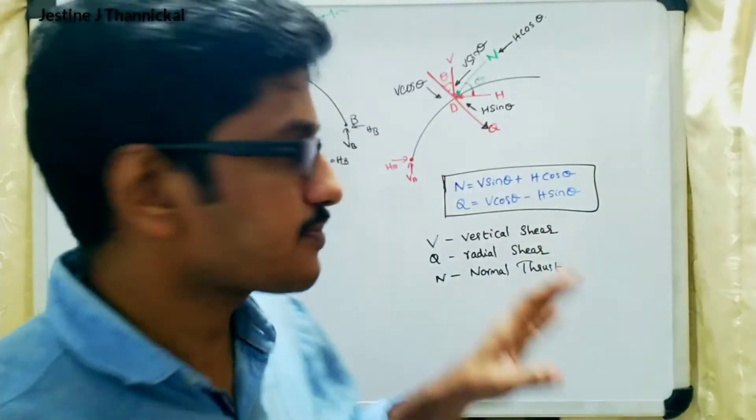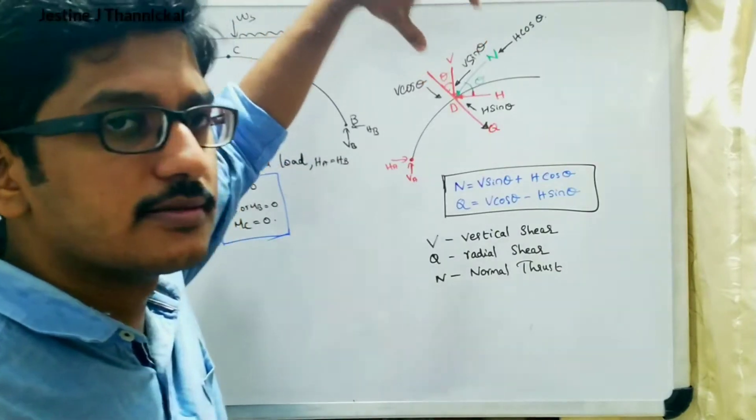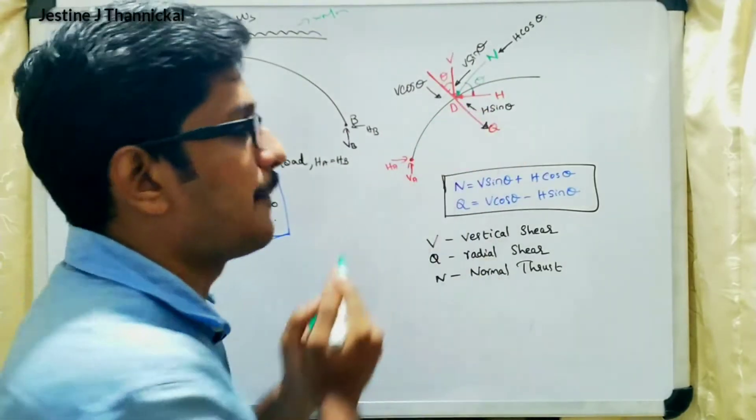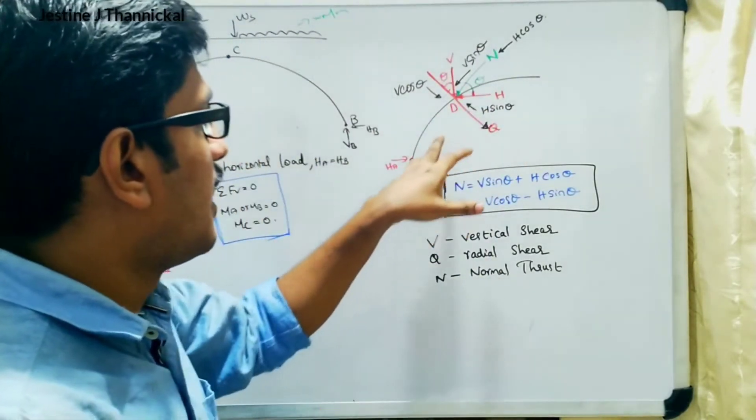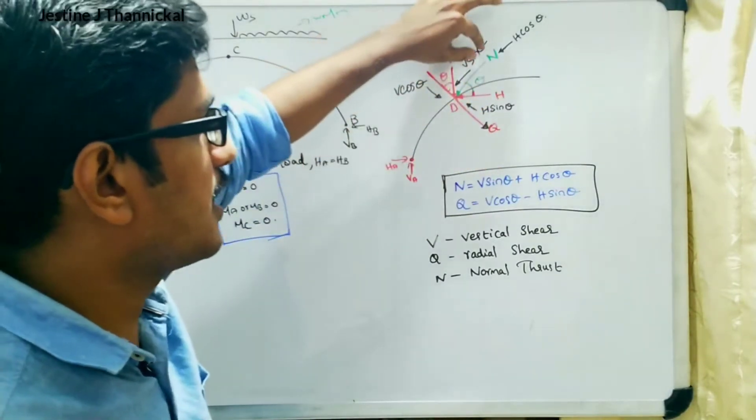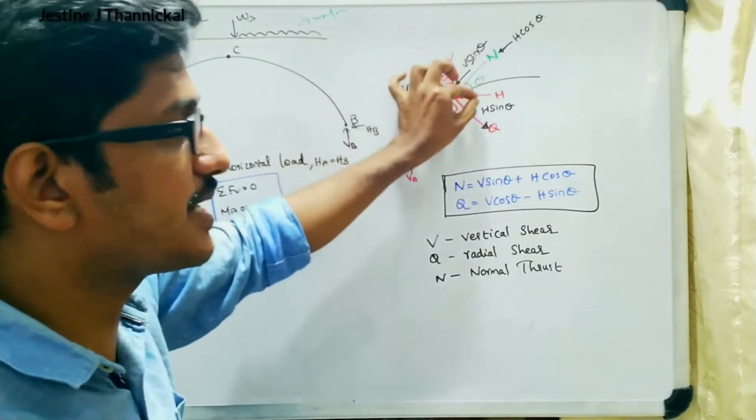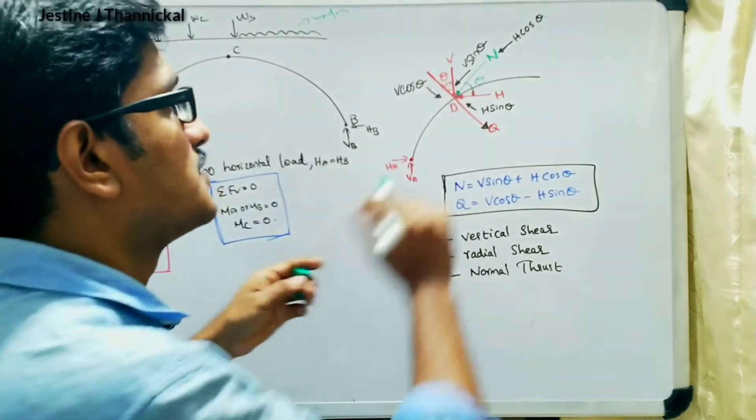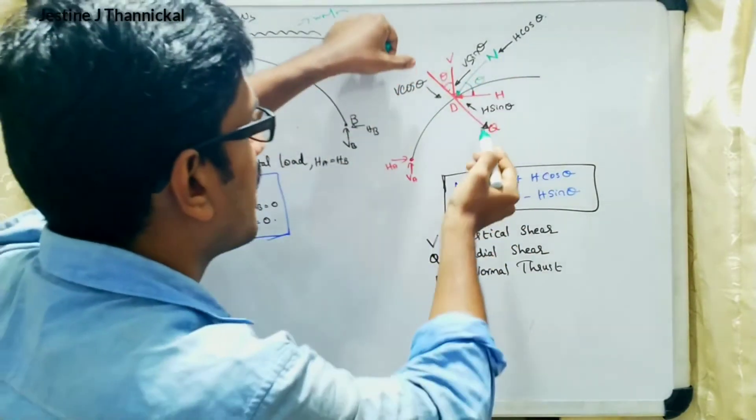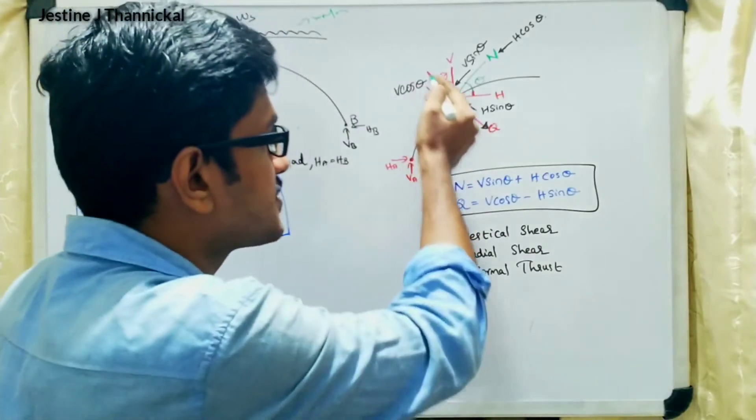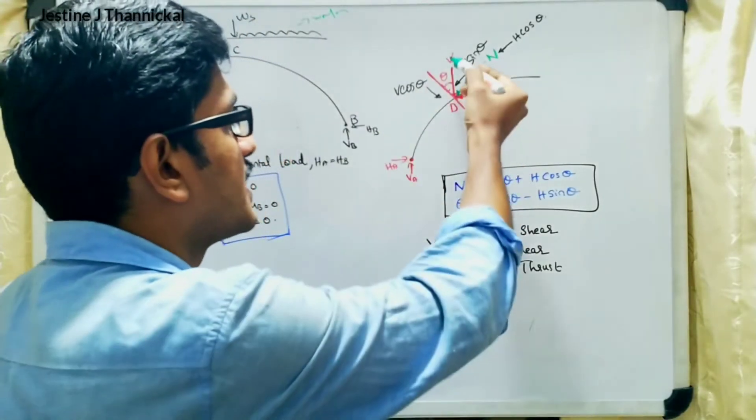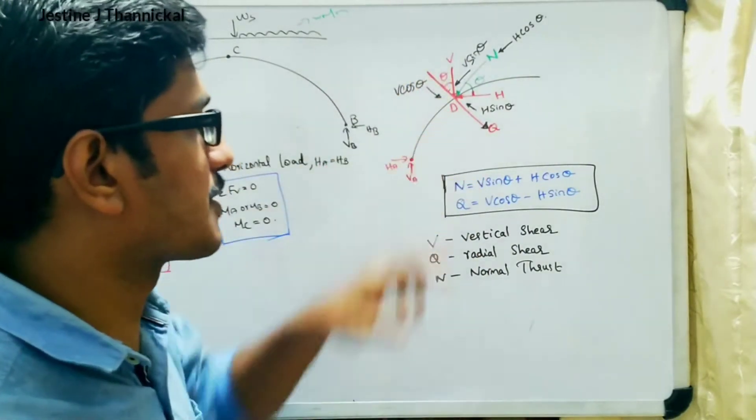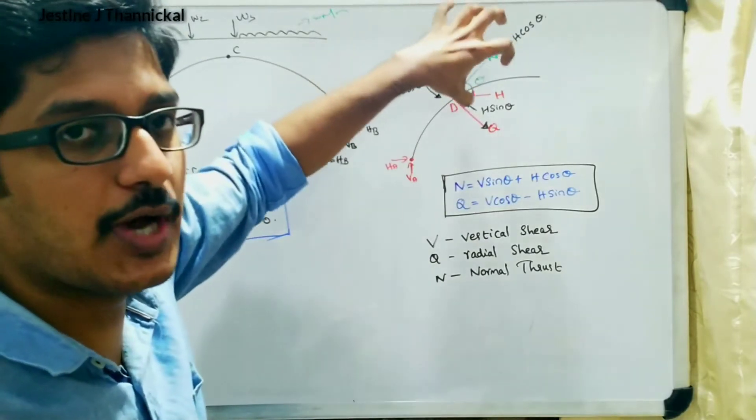Then coming to one of the important equations which is going to be applied in different problems. Here let us take a point capital D over this arc. And here we can see that a normal thrust is acting at an angle theta with the horizontal. These are some of the reactions if you take some point. Capital N is the normal thrust and capital Q is the radial shear occurring over this particular point.